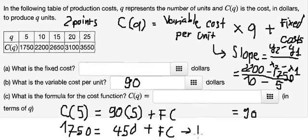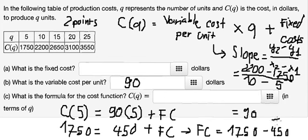And we can find the value of the fixed cost. We put 450 to the left, so we have 1300. The fixed cost we need to put in here is 1300.